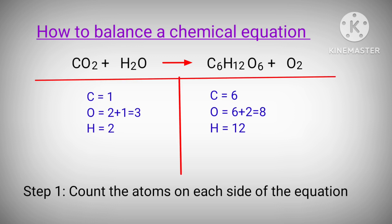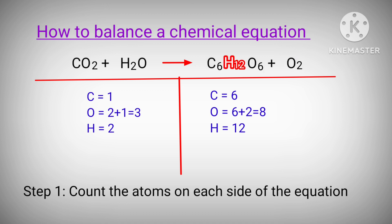In this equation, the left hand side has one carbon atom, three oxygen atoms, and two hydrogen atoms. The right hand side has six carbon atoms, eight oxygen atoms, and 12 hydrogen atoms.